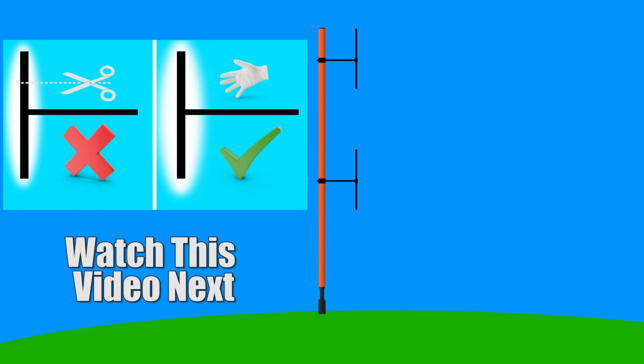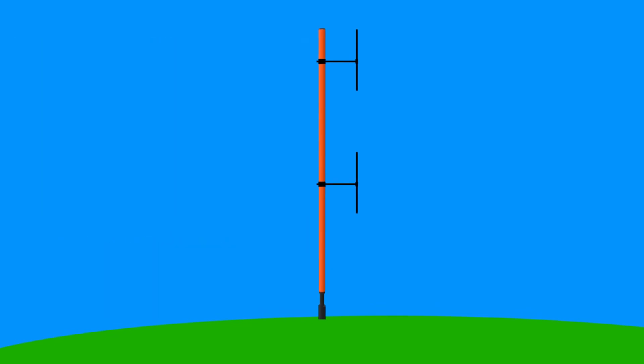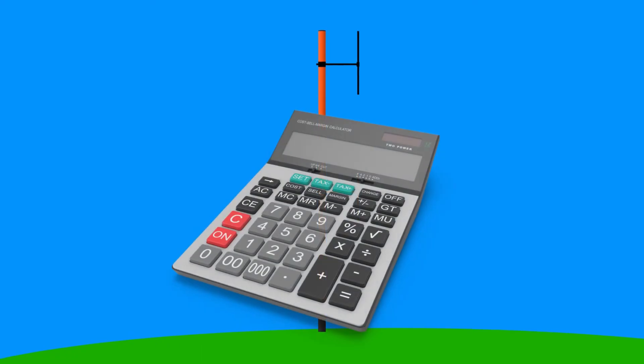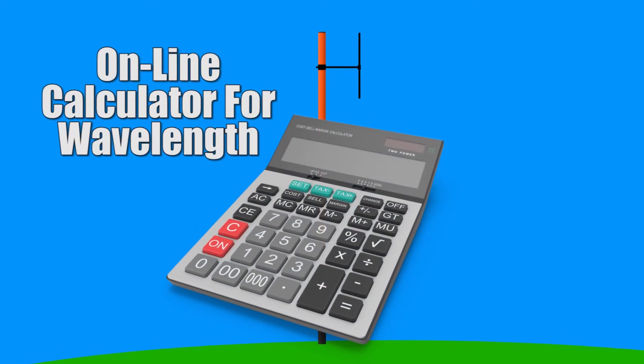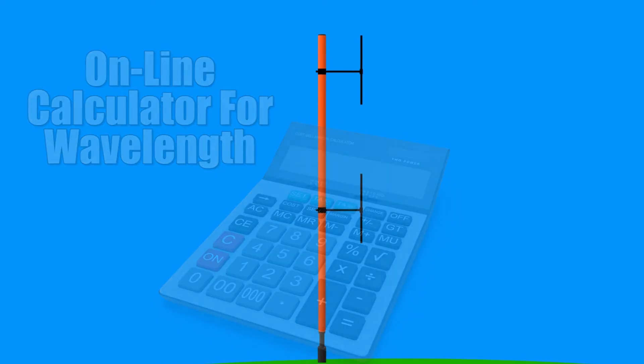To understand how to work out the half wavelength and quarter wavelength, be sure to watch my video on FM antenna tuning. The link is in the description. That video will show you how to calculate the exact wavelengths for your transmitter frequency and to tune your antennas correctly as well.